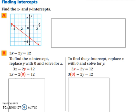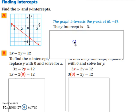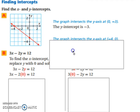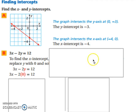Let's start by finding intercepts. We look at our graph — our y-intercept is going to be where it crosses the y-axis. So our y-intercept would be negative 3, or as a coordinate, (0, negative 3). Our x-intercept is where our graph crosses the x-axis. So that happens at negative 4, or as a coordinate, (negative 4, 0).